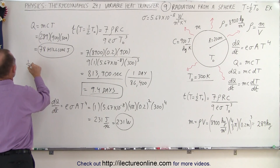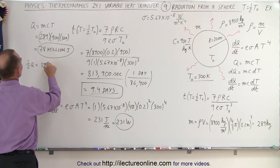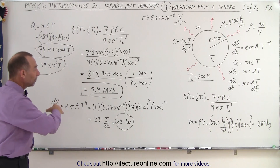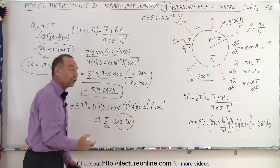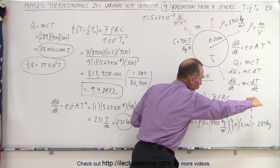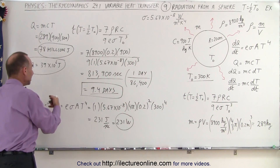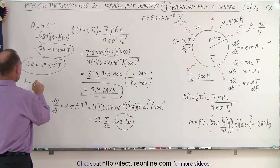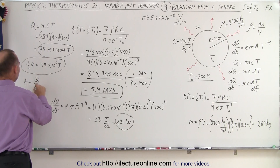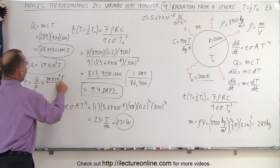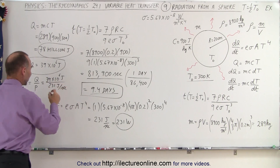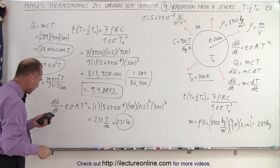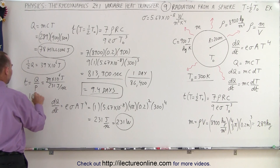Half of Q would be 39 million joules, or 39×10⁶ joules. Emitting at a rate of 231 joules per second, how long would it take to get rid of that much heat? Presuming the radiation continues at the constant rate of 231 watts — which of course is not the case, as the sphere cools and less heat is emitted — the time equals Q divided by power: 39×10⁶ divided by 231, which gives 169,000 seconds.